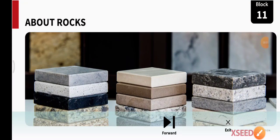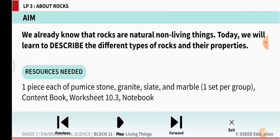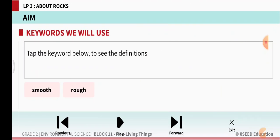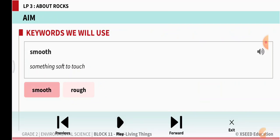Namaste students, welcome to our EVS class. In today's class we are going to learn about rocks. On the screen we can see the different types of rocks, so we will learn to describe the different types of rocks and their properties. The keywords that we are going to learn are smooth, which means something soft to touch, and rough, something that is not soft to touch.